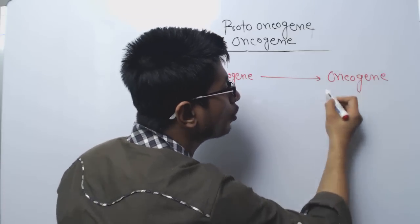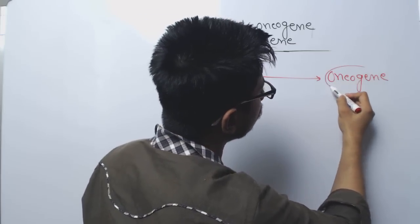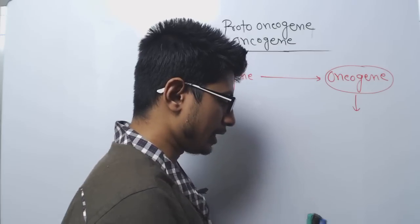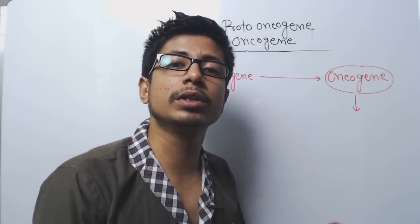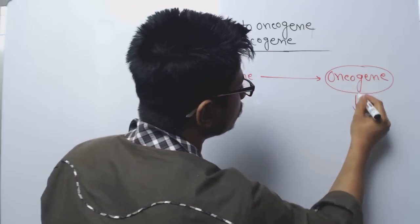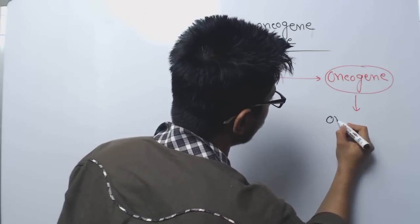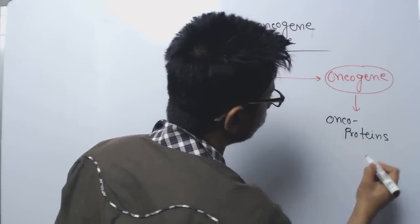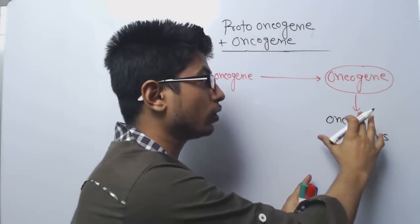Oncogenes are all those genes that produce proteins which will ultimately cause cancer to develop in a person. When oncogenes are translated, they produce specific proteins known as oncoproteins.